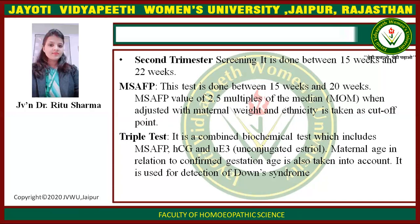Triple test is a combined biochemical test which includes MSAFP, hCG, and UE3 (unconjugated estriol). Maternal age and confirmed gestational age are also taken into account. It is used for detection of Down syndrome.